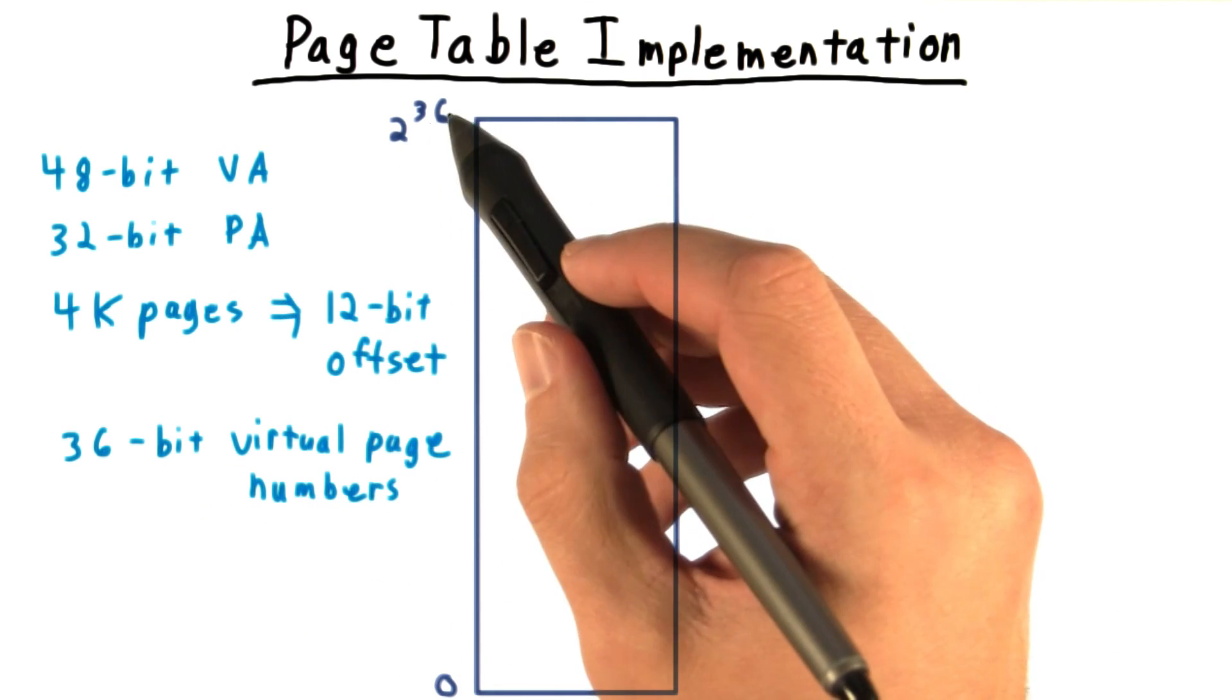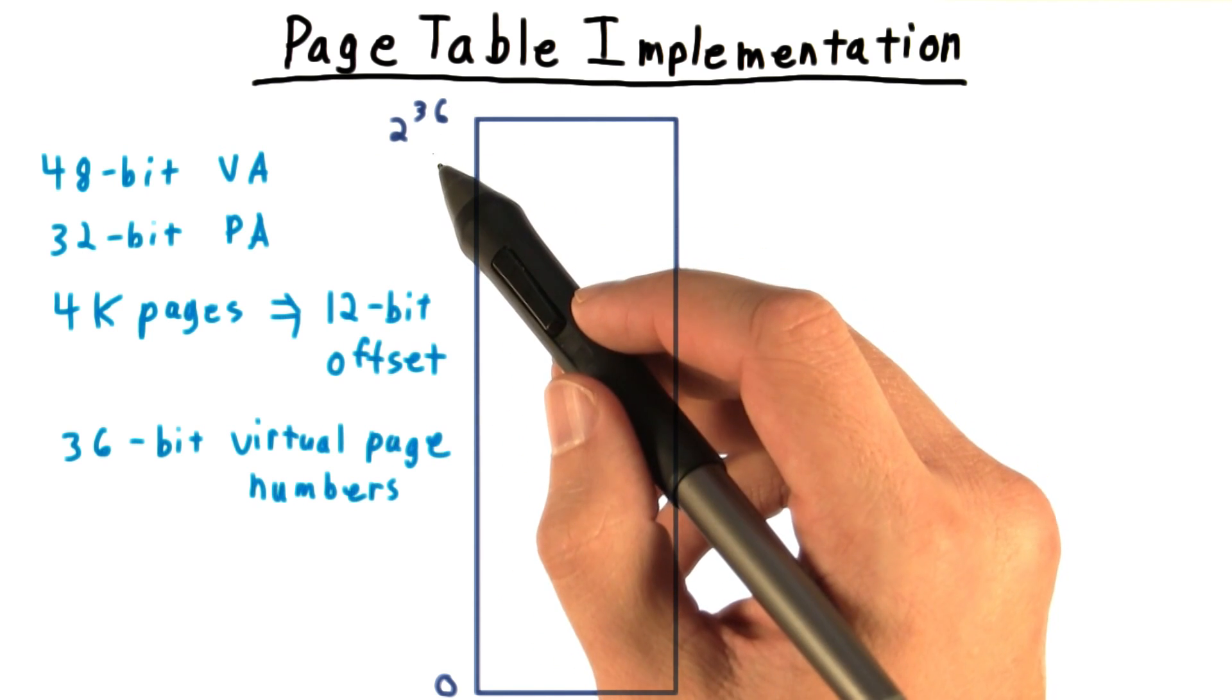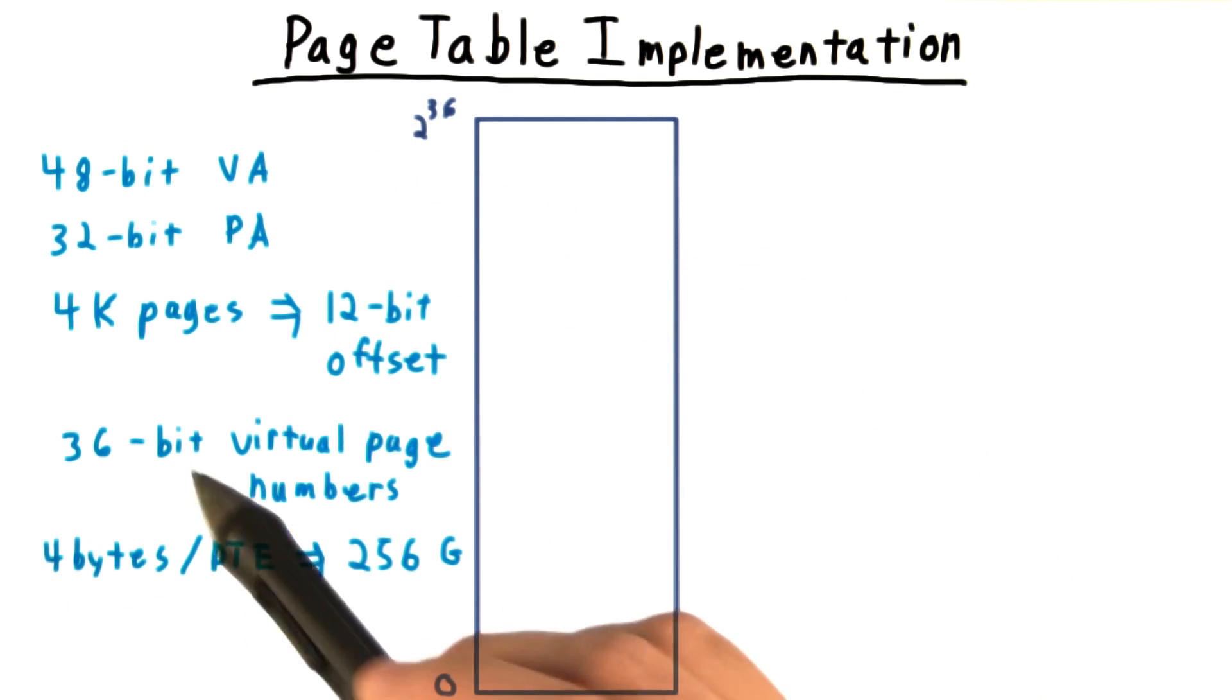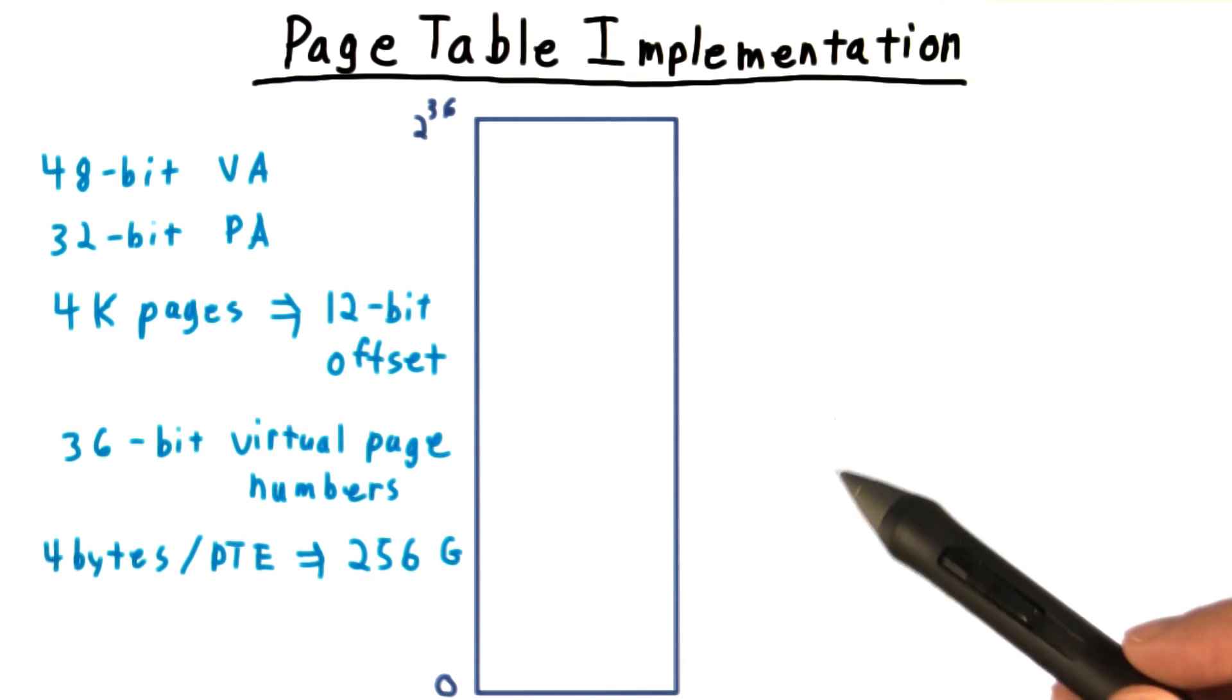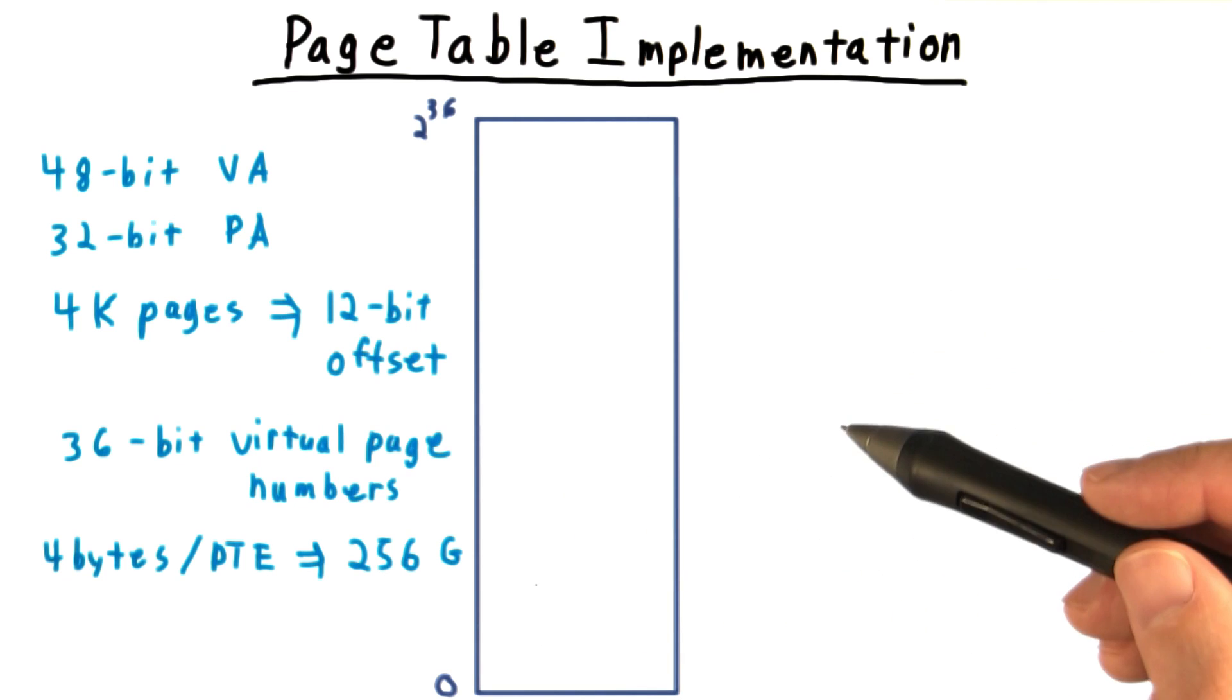That means that we need an array 2 to the 36 long, each entry probably having 4 bytes to specify the physical address, which brings us to a total of about 256 gigs, which is more memory than most machines have in RAM. And almost all of it is wasted since most virtual addresses aren't used.